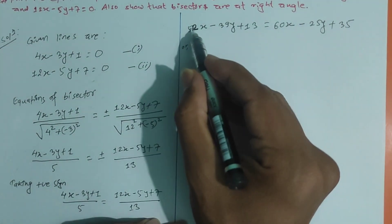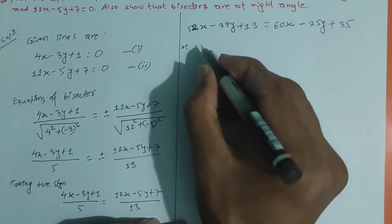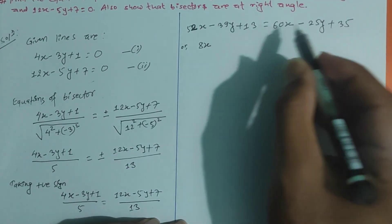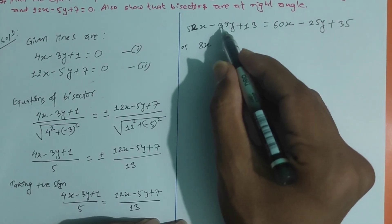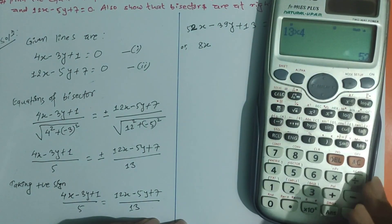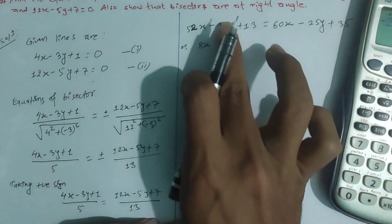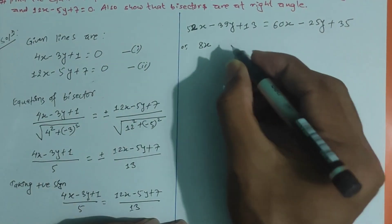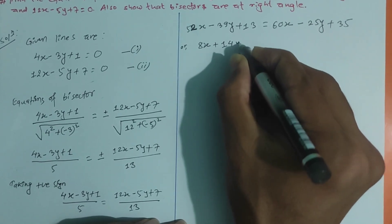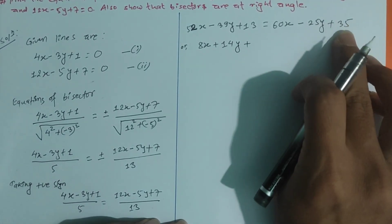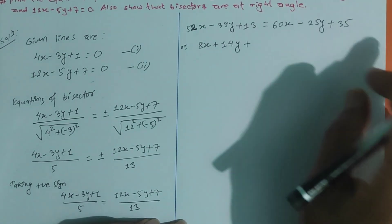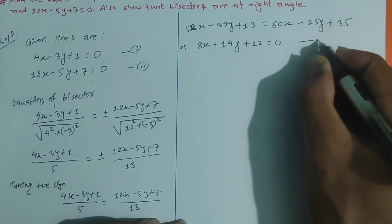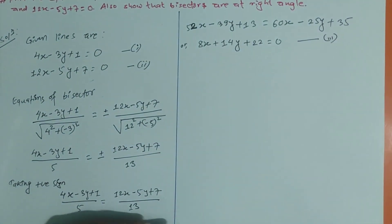60x minus 52x gives 8x, and minus 25y minus 39y. Combining terms: 8x minus 64y plus 35 minus 13 equals 0. This is the first bisector equation.